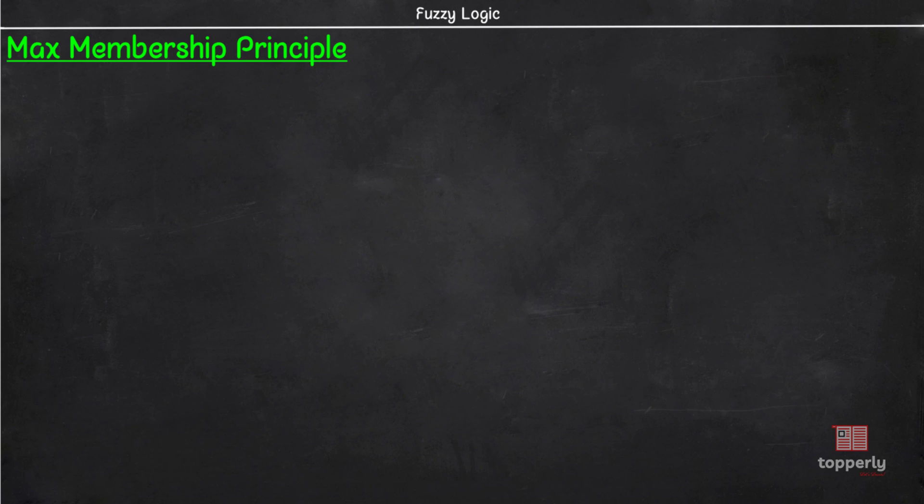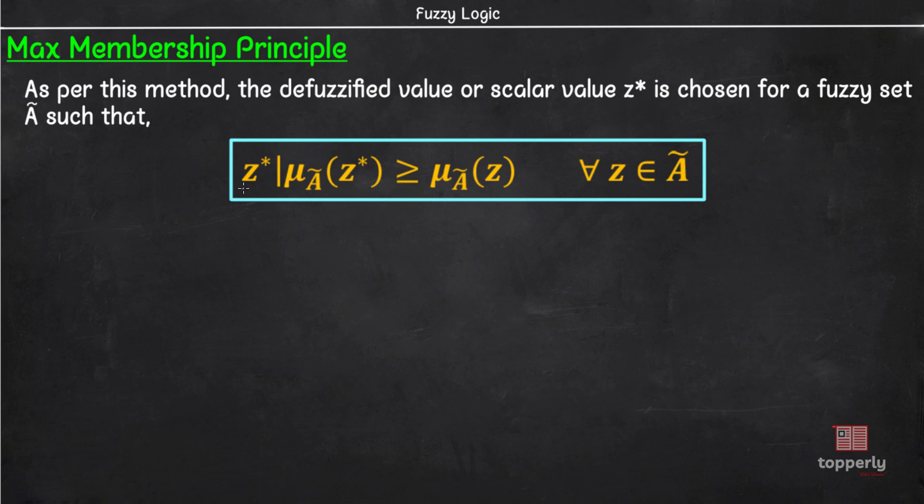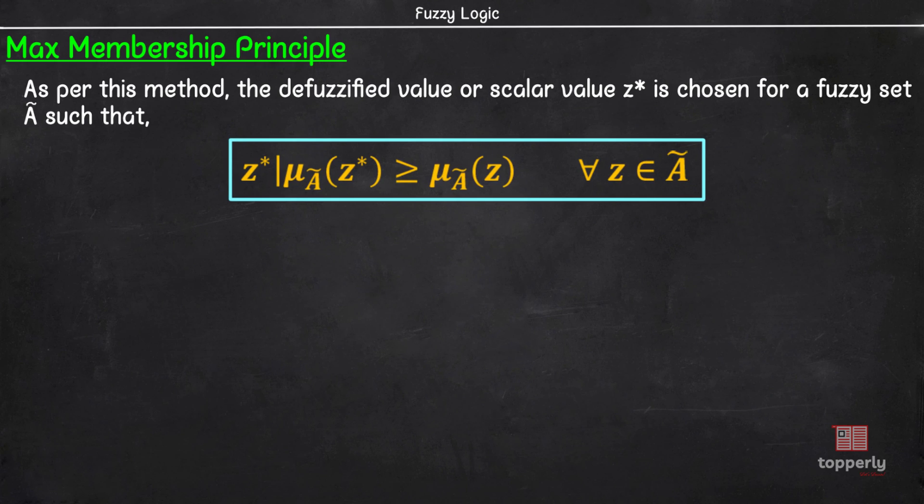First, we will learn about max membership principle. As per this method, the defuzzified value or scalar value z* is chosen for a fuzzy set A such that membership value of z* in fuzzy set A is greater than or equal to membership value of z in fuzzy set A for all z belonging to fuzzy set A.